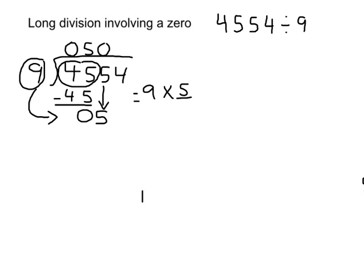What you're going to do next now is you have to bring down the next digit, which is 4. And the 4 is going to go next to the 5 in the answer. And now, we can do the next phase, which is how many groups of 9 can go into 54.